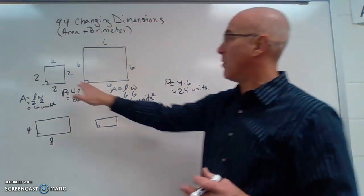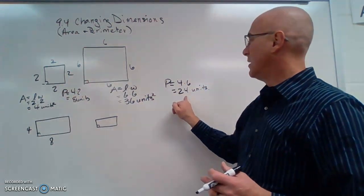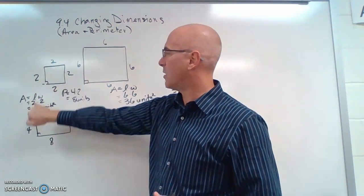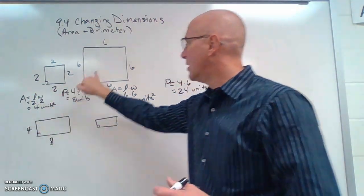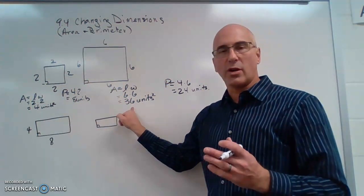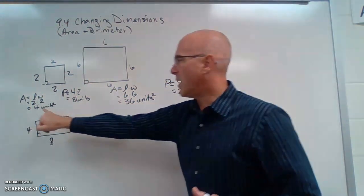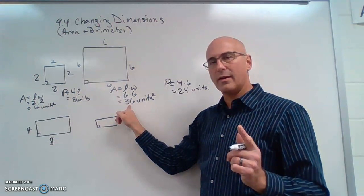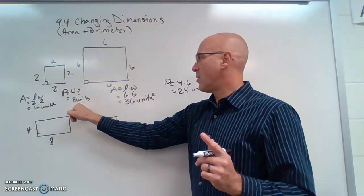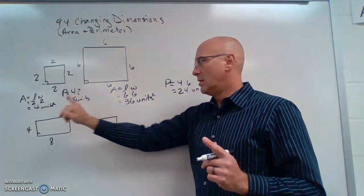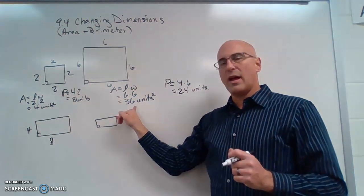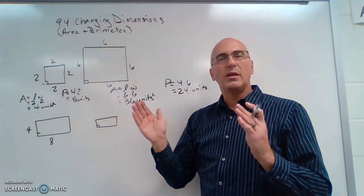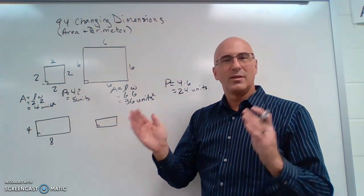Now, let's look at the area. The area of the small square is 4 square units. The area of the big square is 36 square units. So I had to multiply this times 9. Let's think about that. The perimeter I multiplied by 3. The area I had to multiply by 9. How is 3 related to 9? Well, 3 squared is 9.